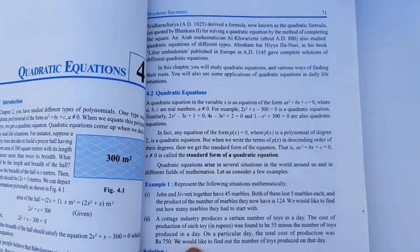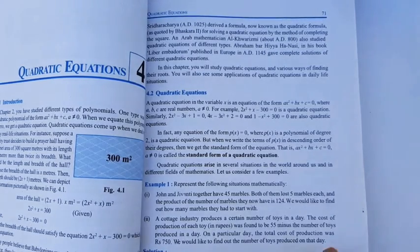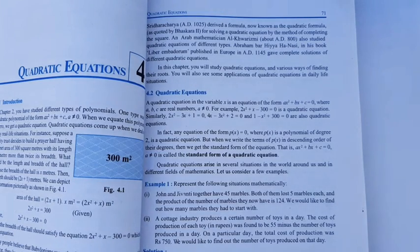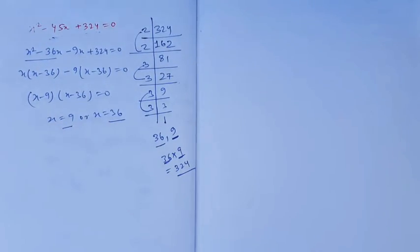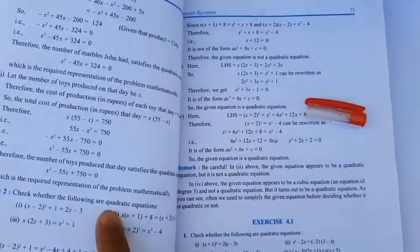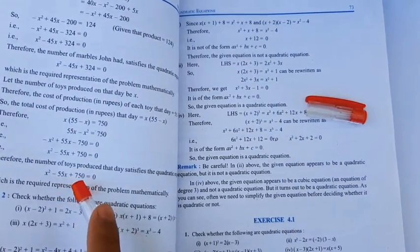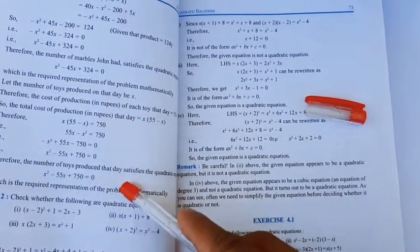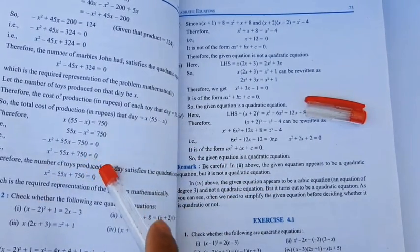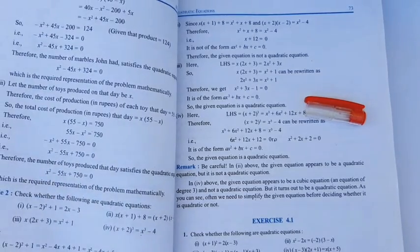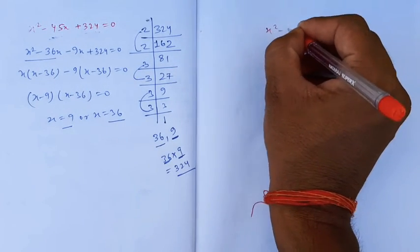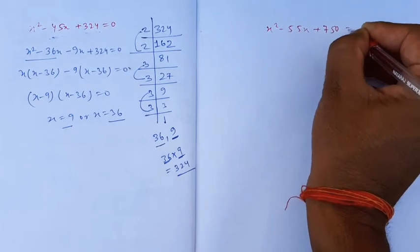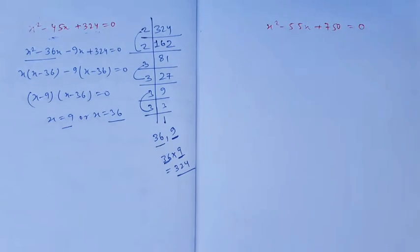For the second problem about toy production, the quadratic equation is x² - 55x + 750 = 0. We need to solve this equation.